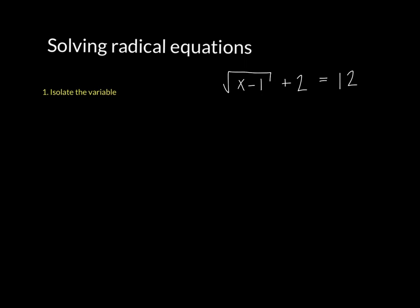So here's my example. I have the square root of x minus 1 plus 2 equals 12. So I want that radical all by itself, so I will just subtract 2 from both sides. And I end up with the square root of x minus 1 equals 10.